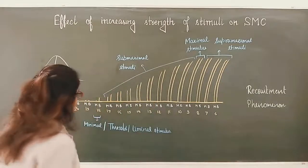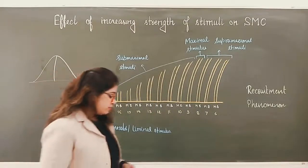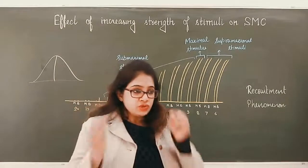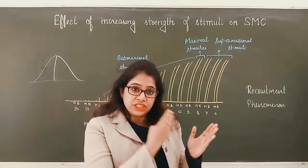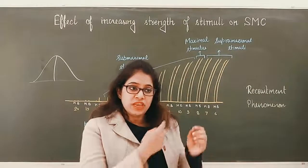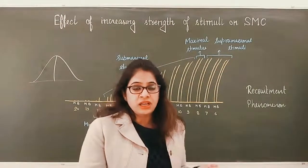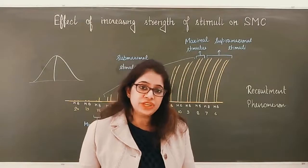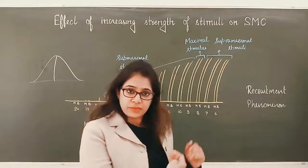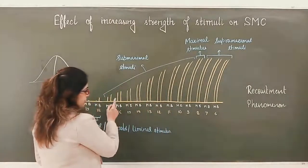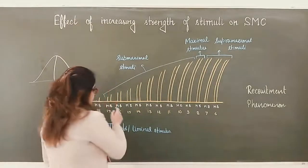Another thing you may wonder about is M and B — make shock and break shock. Induced current is produced only when there is a change in flux in the primary circuit. So when the current was starting — make shock — or the current was breaking — break shock — only then was induced current produced in the secondary circuit. At a single point there may be two strengths of current: one at the make and one at the break.